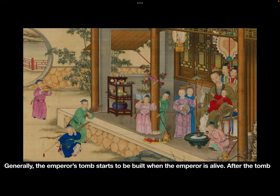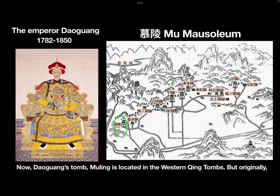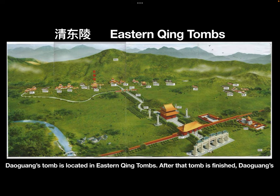Generally, the empress's tomb starts to be built when the emperor is alive. After the tomb is finished, the deceased empress can be buried in the tomb first. Now, Daoguang's tomb, Mu Lin, is located in the western Qing tombs. But originally, Daoguang's tomb was located in the eastern Qing tombs. After that tomb was finished, Daoguang's first wife, the Empress Xiao Mu Cheng, was buried there.